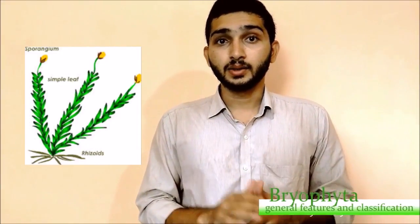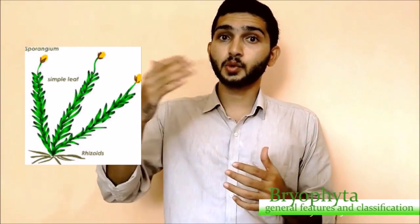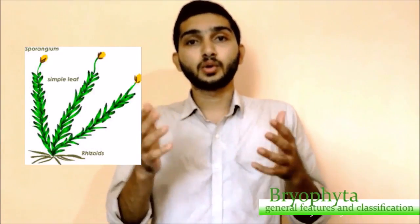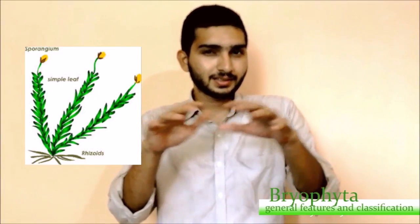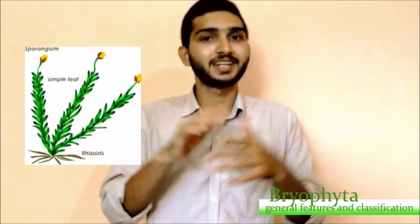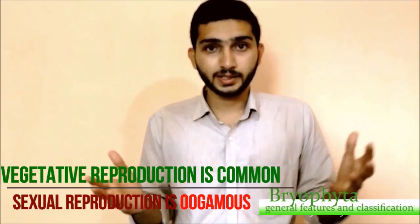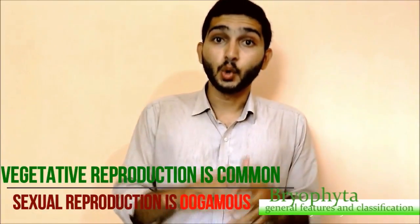The plant body, except the rhizoids, contains chloroplast pigment. When rhizoids are exposed to sunlight, they also show the presence of chloroplast pigment and appear somewhat green in color. The vegetative phase of these plants is very simple, but the reproductive phase is oogamous.